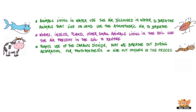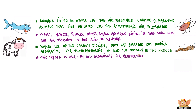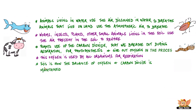Plants use up the carbon dioxide that we breathe out during respiration for photosynthesis, and they give out oxygen in the process. This oxygen is used by all living organisms for respiration. This is how the balance of oxygen and carbon dioxide is maintained.